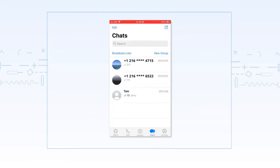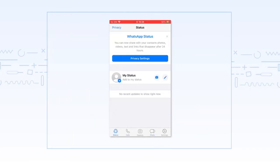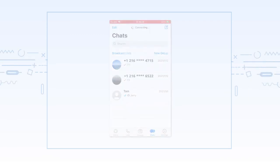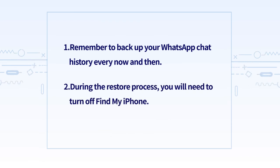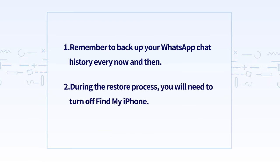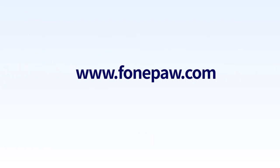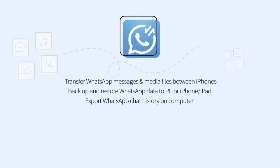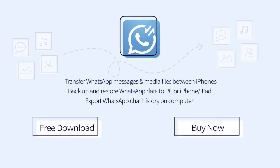Finally, restart your phone and you will find the WhatsApp data on your phone. That's all. Now go to www.phonepaw.com and download PhonePaw WhatsApp Transfer to begin transferring your WhatsApp data. Thank you.